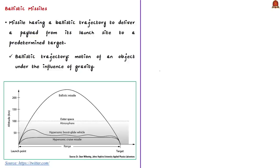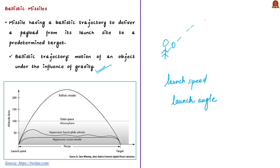Ballistic missiles follow a ballistic trajectory — the motion of an object under the influence of gravity, determined by gravitational acceleration, launch speed, and launch angle. Like a cricket ball thrown in the air, the more the launch speed, the farther it goes. A ballistic missile follows the path of an unpowered object moving only under the influence of gravity and atmospheric friction, with its surface providing no significant lift to alter the course of flight.